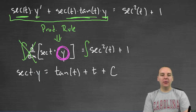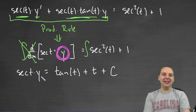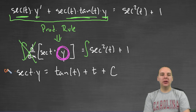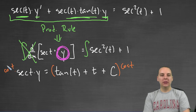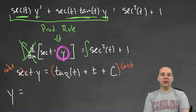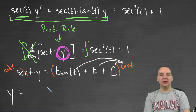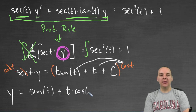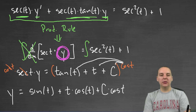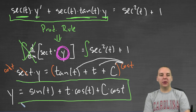Last step: we want to get y by itself, so we divide by secant — or equivalently, multiply both sides by cos(t). The secant and cosine cancel on the left. On the right, tangent is sine over cosine, so multiplying cosine through cancels the cosines, leaving sine(t). Then we have plus t·cos(t), plus C·cos(t). This is your solution to that differential equation — y equals sin(t) plus t·cos(t) plus C·cos(t).